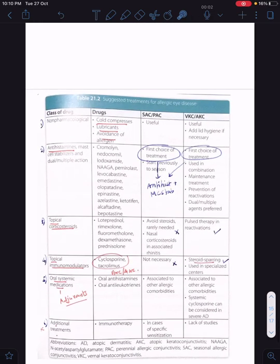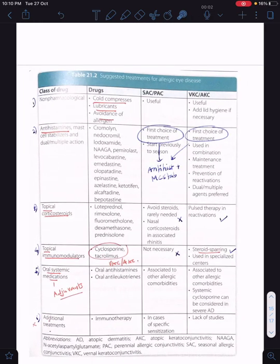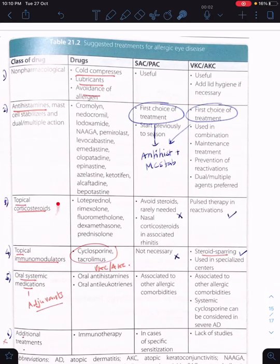Going to the final table: as far as treatment goes, you have non-pharmacological treatment useful in both categories—cold compressions, lubricants, and avoidance of allergens. As far as antihistamines are concerned, that is dual action things, the first choice of treatment for both SAC/PAC complex and VKC/AKC complex is combination therapies—the dual action therapies like olopatadine, bepotastine, or alcaftadine. As far as topical corticosteroids are concerned, there is no role for seasonal or perennial allergic conjunctivitis—avoid steroids, they're rarely needed. But for VKC/AKC, you can give pulsed therapy in reactivations or exacerbations. Start them on topical corticosteroids, the soft steroids, and have a close watch on the patients.